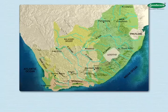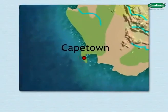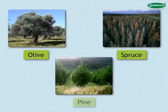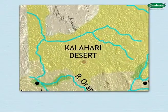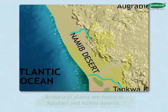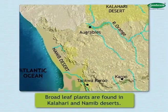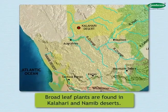See the color map. Towards the south, near Cape Town, we find trees like olive, spruce, and pine. On the basis of your previous knowledge, find what type of plants would be found in the Kalahari and Namib deserts. Broad-leaf plants are found in the Kalahari and Namib deserts.